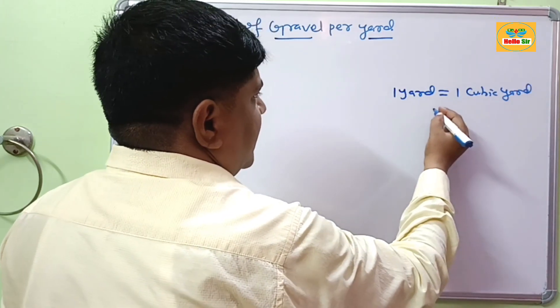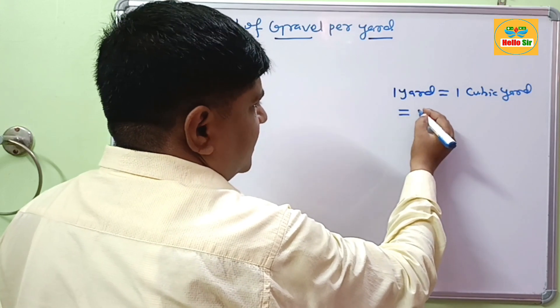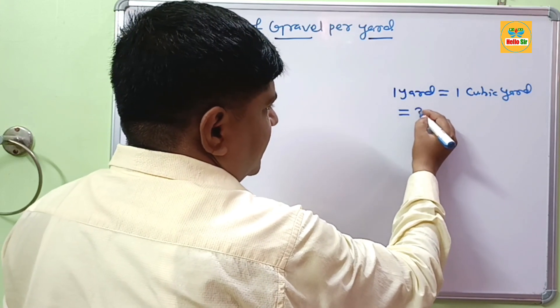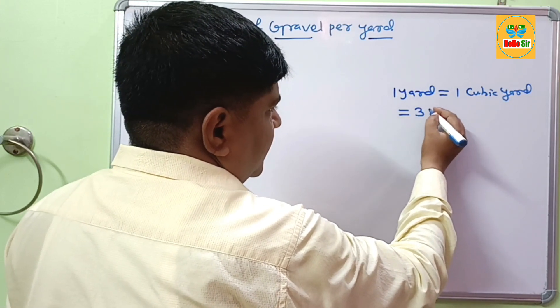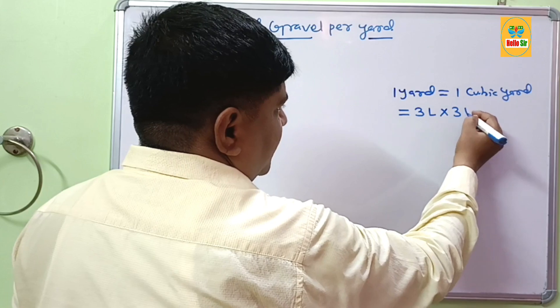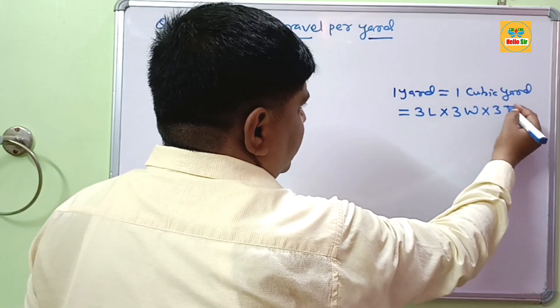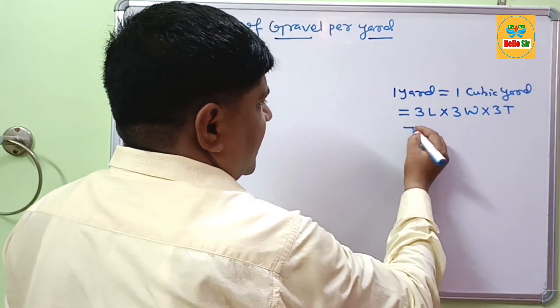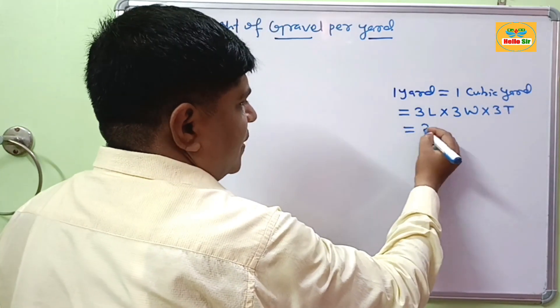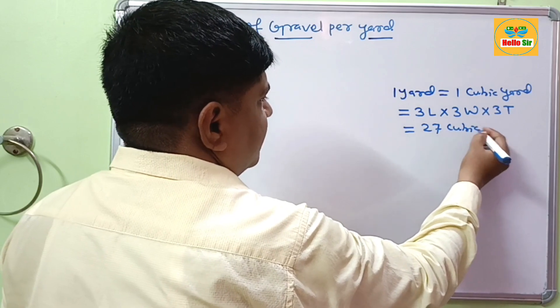One cubic yard is three foot in length, three foot in width, and three foot in thickness, and this equals 27 cubic feet.